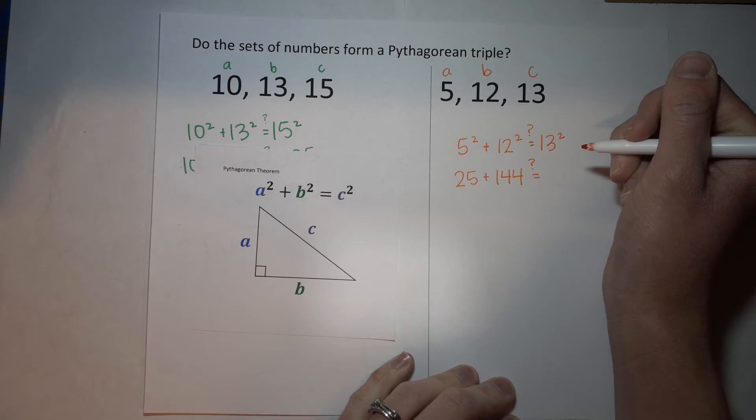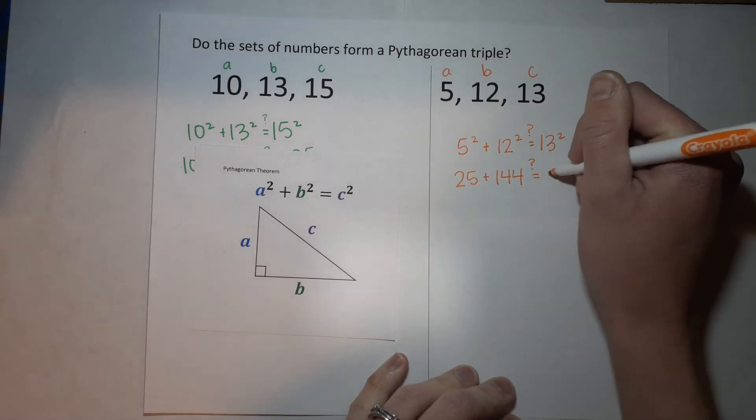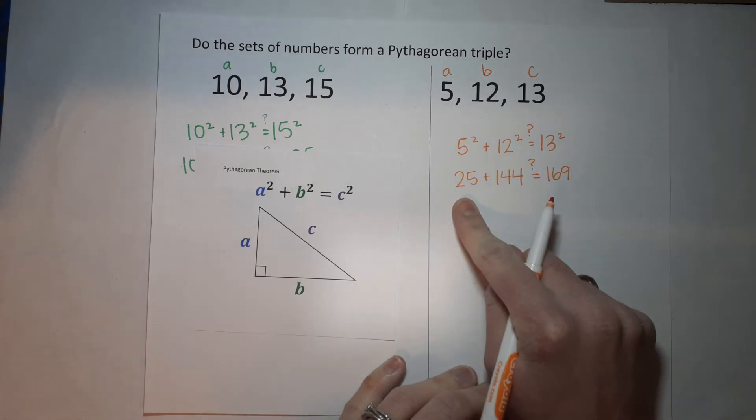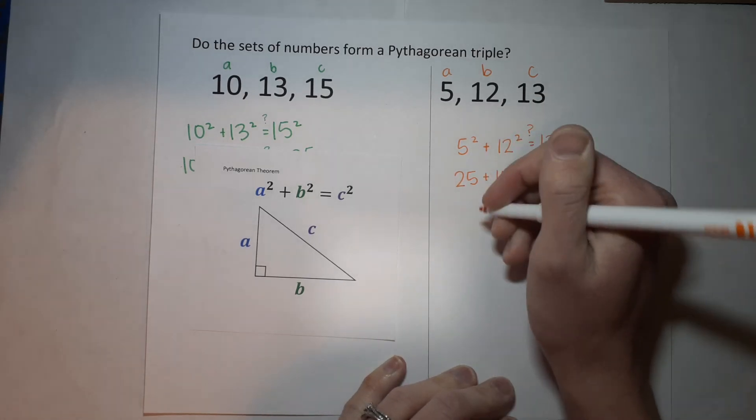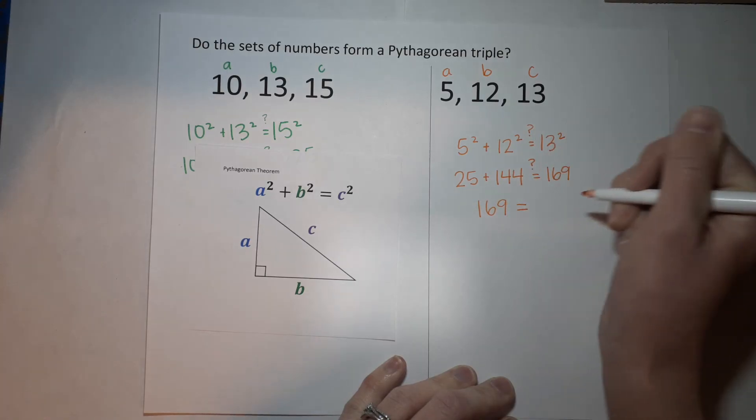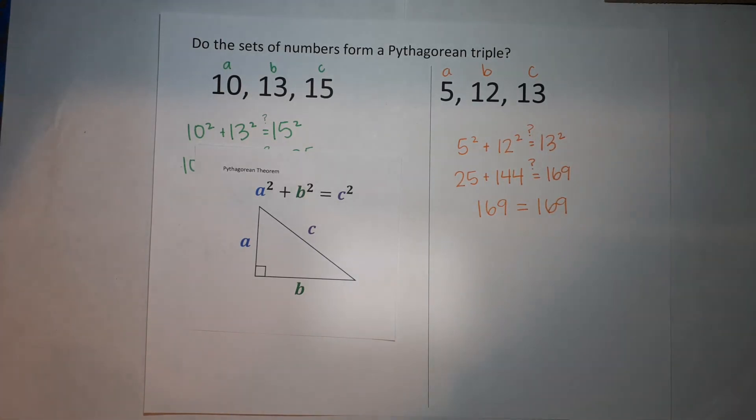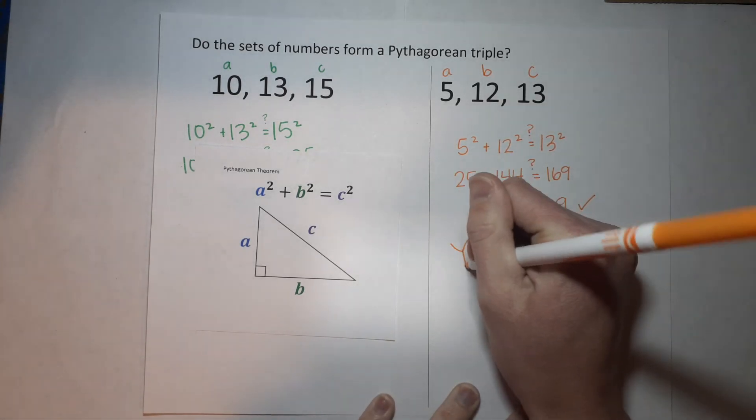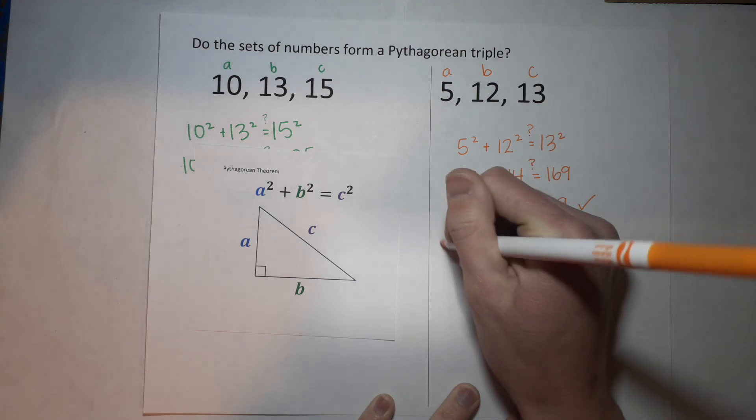Equals 169. Okay, 25 + 144 gives me 169. 169! Oh my gosh, best day ever! So 169 equals 169. That is true. Yes!